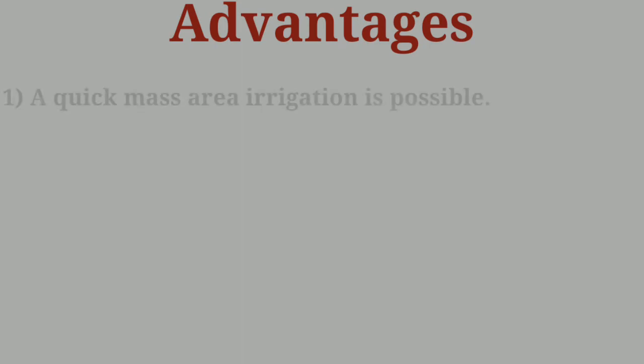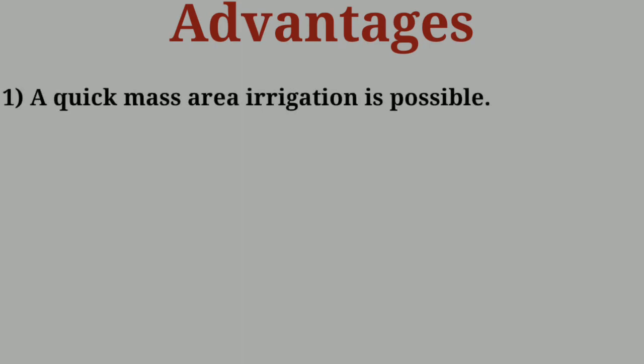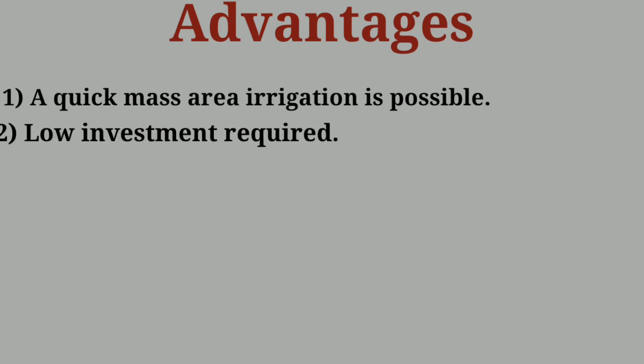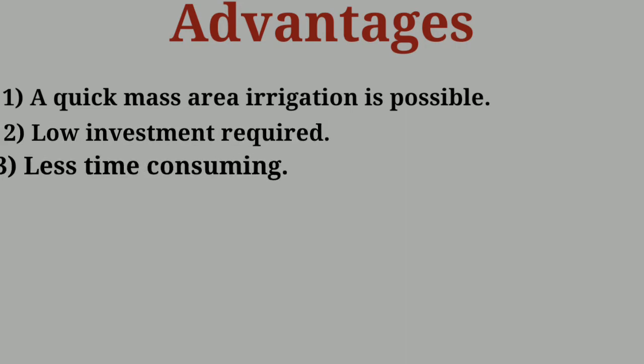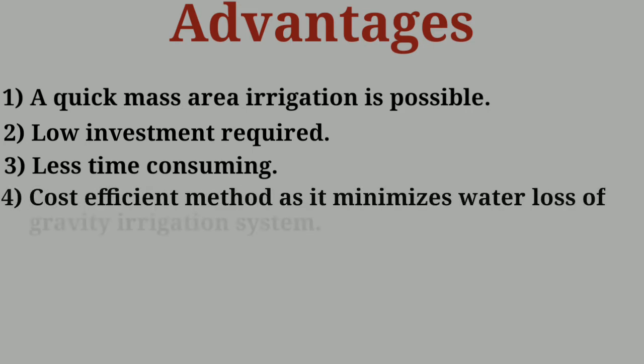What are the advantages of furrow irrigation? Quick mass-area irrigation is possible, meaning a large area can be irrigated quickly. Low investment is required, it is less time-consuming, and labor is almost zero — once the water is let in, it will irrigate the land. It is also cost efficient.